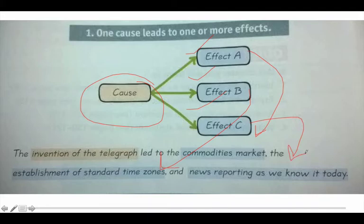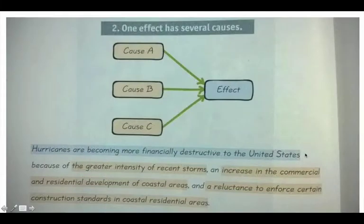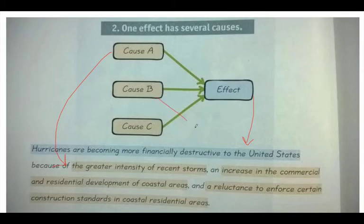You're very used to writing those, especially in your history classes. What you may not be used to writing is an effect that has several causes. Here's how you would write a claim for that: 'Hurricanes are becoming more financially destructive to the United States.' That's your effect. Why? Because of greater intensity of recent storms, increase in the commercial and residential development of coastal areas, and reluctance to enforce certain construction standards in coastal residential areas. So instead of looking at the three effects of a cause, you're looking at the three causes of an effect.